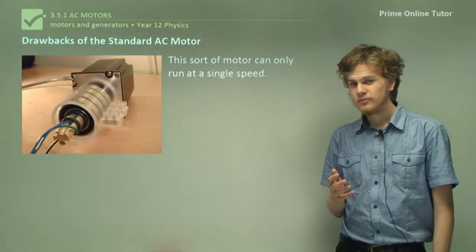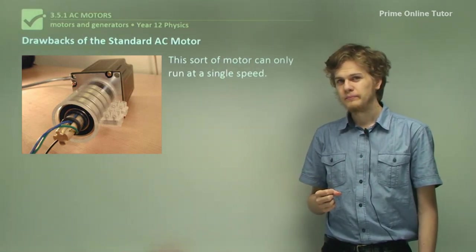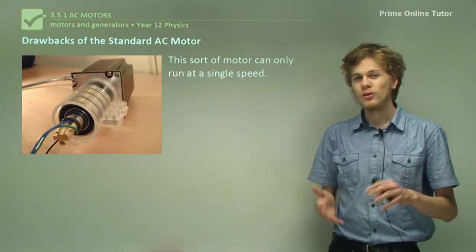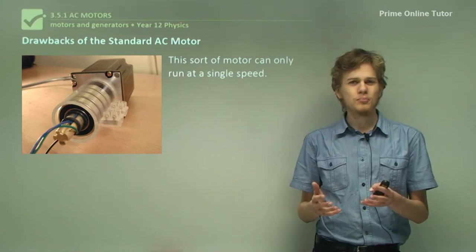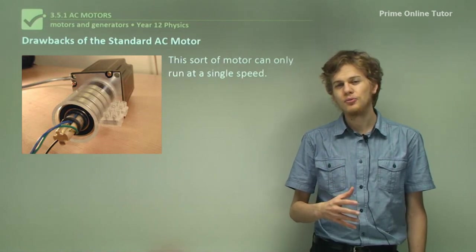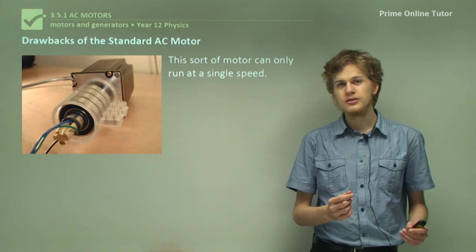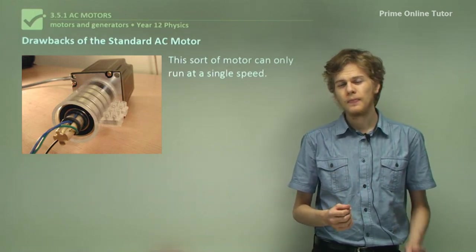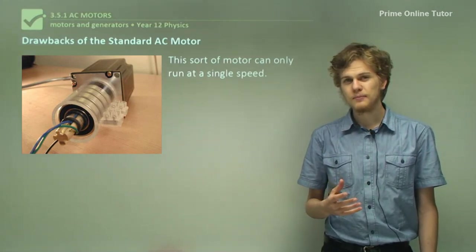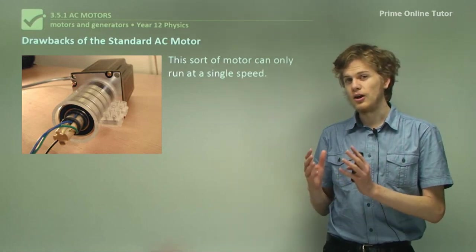One of the disadvantages of this brushed AC motor is that it can only run at a single speed. If the electricity through the coil is not varying at the same rate that the coil is spinning, then the coil won't be able to spin properly. It needs to be rotating through the magnetic field at the same rate that the current through it changes. So if the current through it is 50 Hz — that is, it changes back and forth 50 times a second — then the motor will need to be going around one full revolution 50 times a second. The frequency of the power source and the frequency of the motor's rotation have to match.